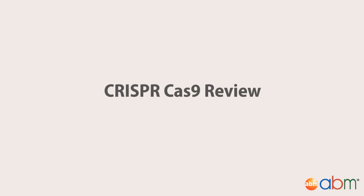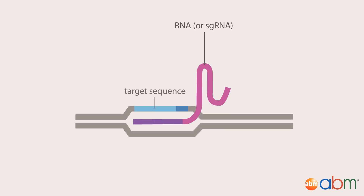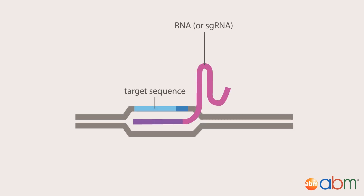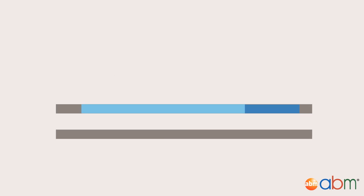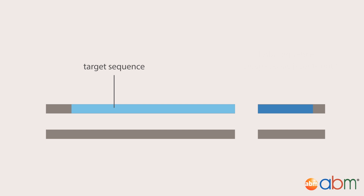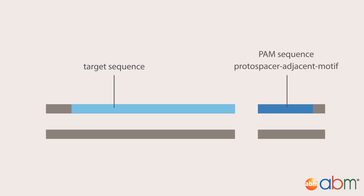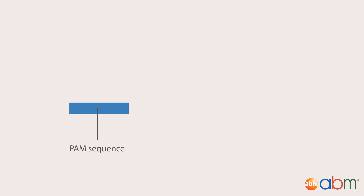First, let's quickly review how CRISPR gene editing works. The mechanism is elegantly simple, requiring only two components: a single guide RNA targeted to your gene of interest, and the RNA-guided Cas9 endonuclease. In the presence of an sgRNA, Cas9 endonuclease homes in on the target sequence.